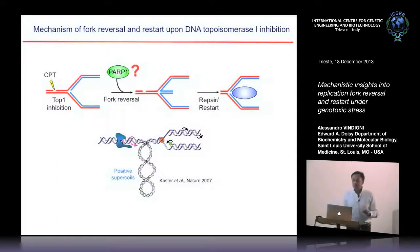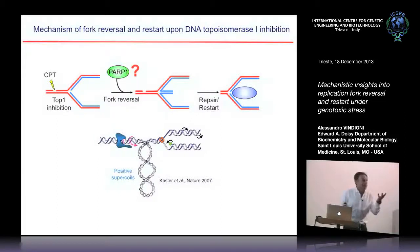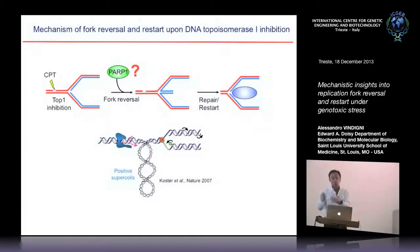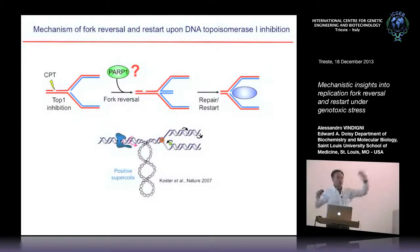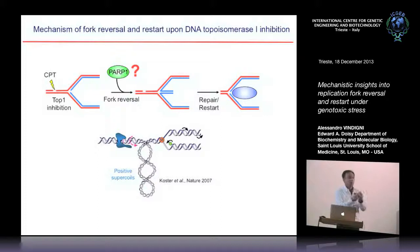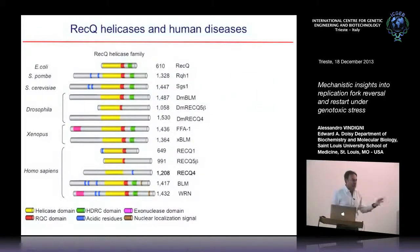The other open question was: once reverse forks form, how are they eventually restarted? Is there an enzyme in cells that pushes reverse forks back to a normal functional fork? The idea is you need something to restart replication after the lesion is repaired. These two questions — why PARP is needed and how reverse forks restart — are what we addressed in our lab.